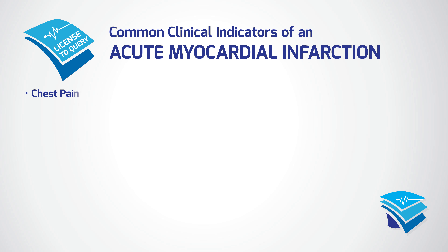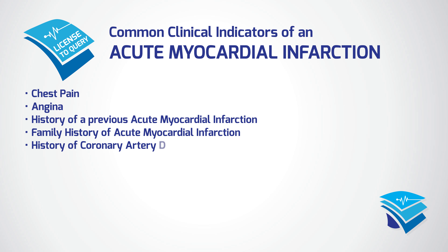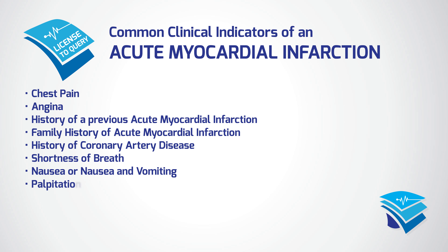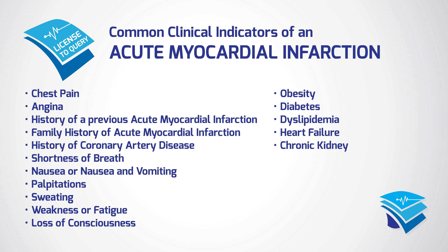Common clinical indicators of an acute myocardial infarction include chest pain, angina, history of a previous acute myocardial infarction, family history of an acute myocardial infarction, history of coronary artery disease, shortness of breath, nausea or nausea and vomiting, palpitations, sweating, weakness or fatigue, loss of consciousness, obesity, diabetes, dyslipidemia, heart failure, chronic kidney disease, hypertension, and smoking or a history of smoking.